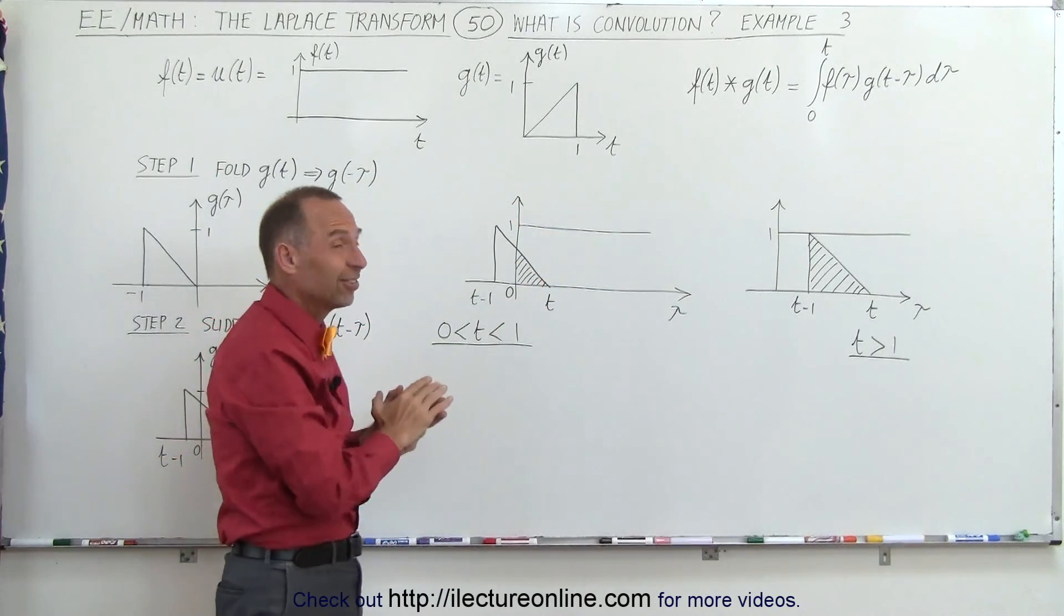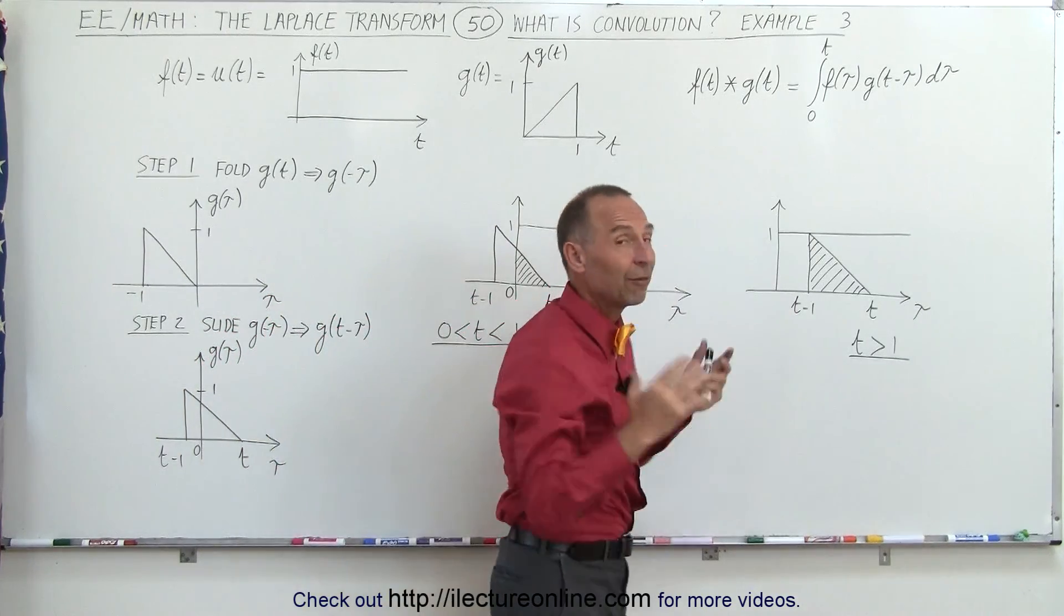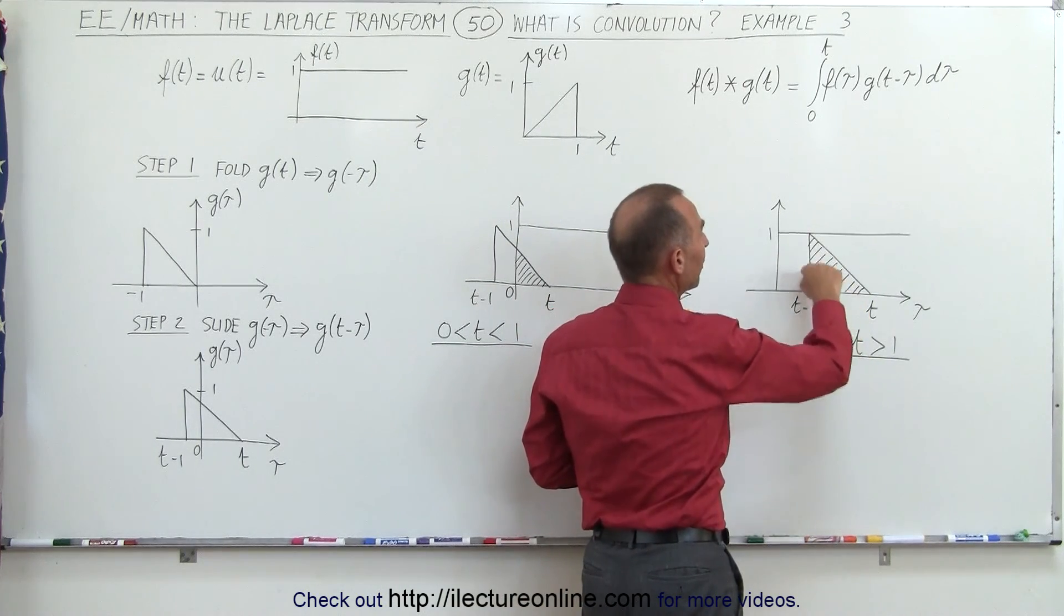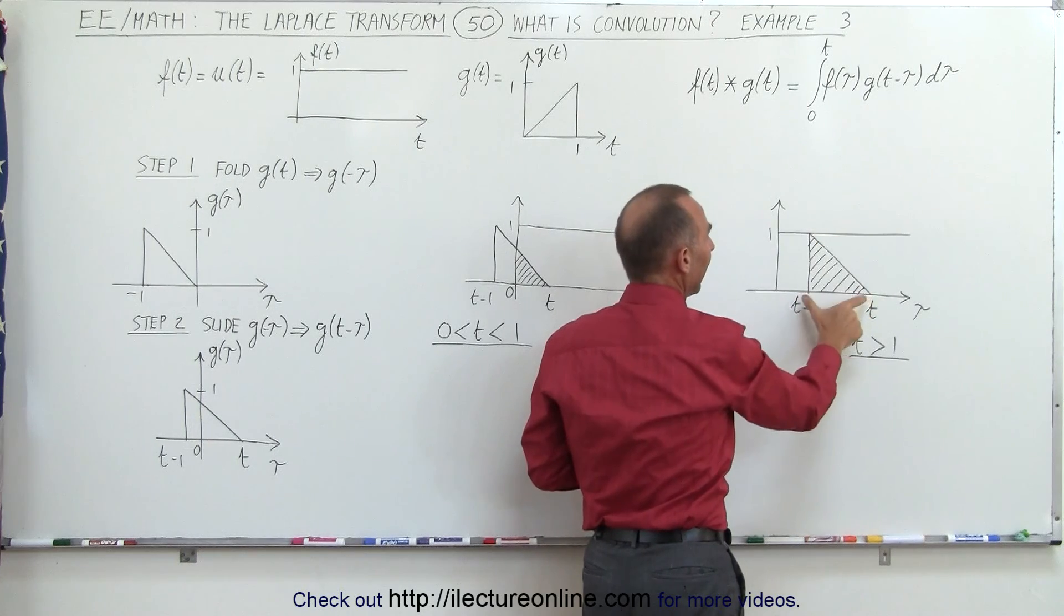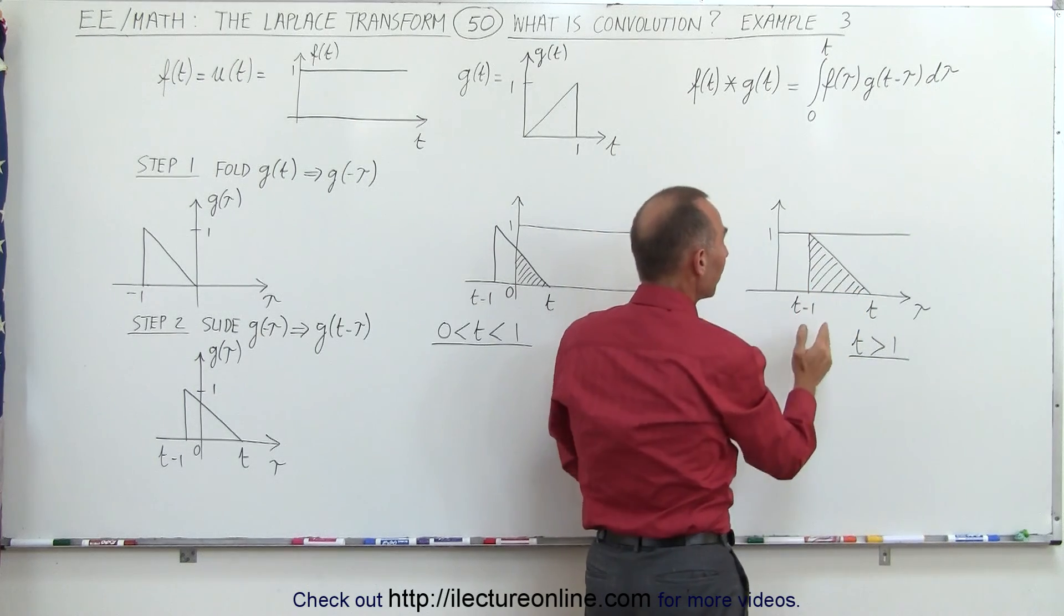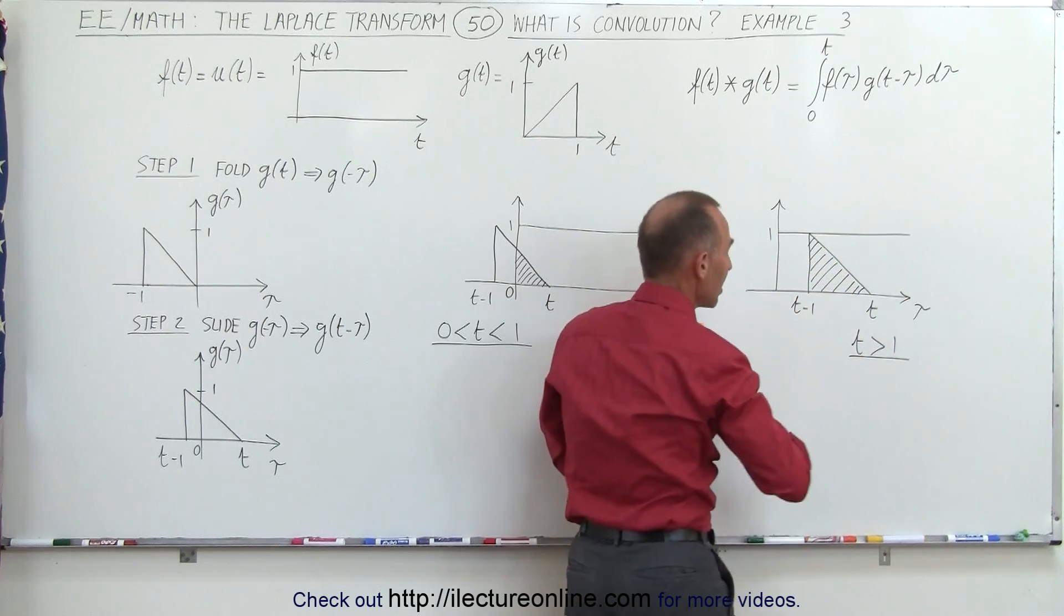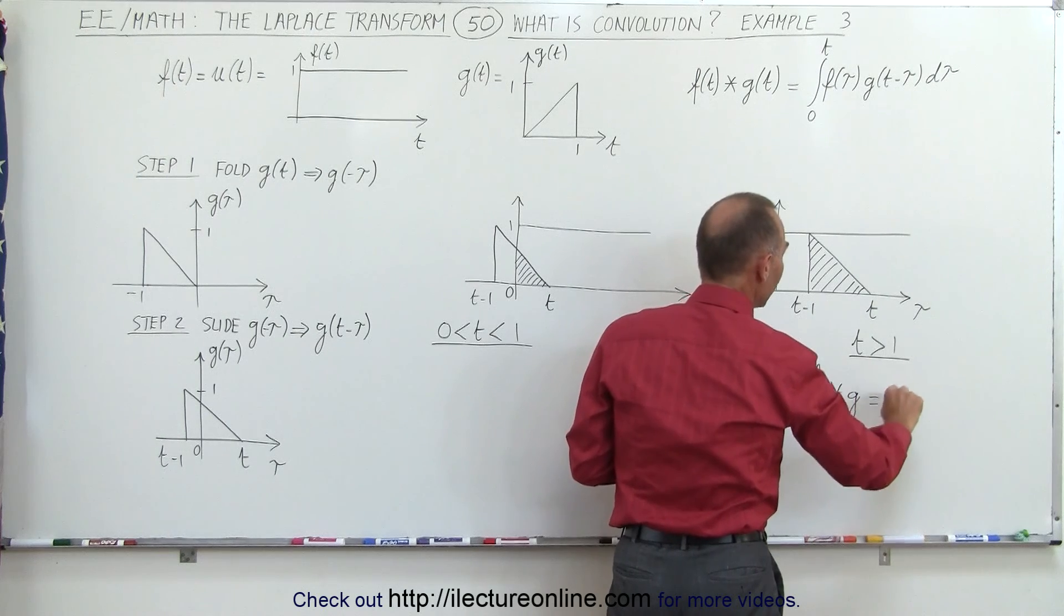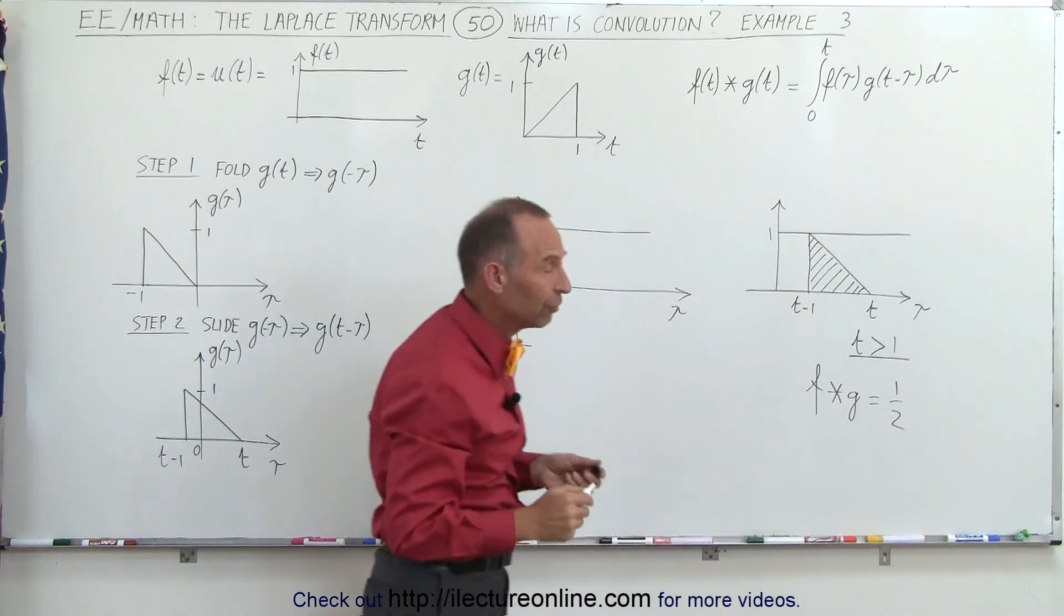But since the height is not constant, it's better that we use this definition. Now over here, we don't have a problem, because here, the overlap will be the average area here, because if this is the height here, which is 1, and the width here is 1, then the area of the wedge is equal to 1 half. So we simply multiply the height of the unit function, which is 1, times the area of the wedge, and we can see here that f convolved with g simply is equal to 1 half. It's simply the product of the overlap of the two functions.